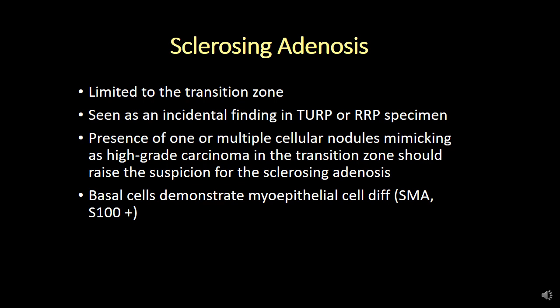An interesting phenomenon that happens in this case is that basal cells undergo myoepithelial cell differentiation. So smooth muscle actin and S100 myoepithelial markers are going to be positive in this case, and basal cells are also typically positive. Keep this particular condition in your differential when dealing with this type of situation — a very important condition not to be misdiagnosed as a high grade prostate cancer.